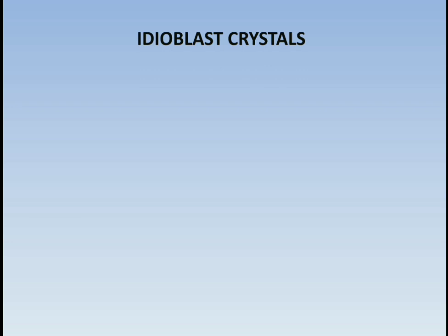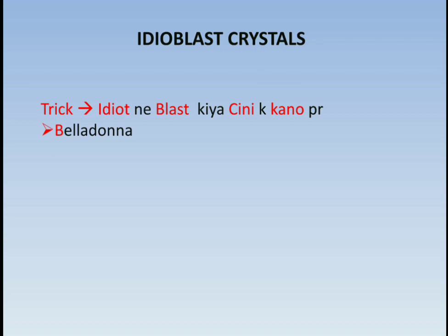Next is idioblast crystals. The trick to learn which drugs have idioblast crystals is: 'Idiot ne blast kia sini ke kanon par,' meaning idioblast. Idiot resembles idioblast. B denotes belladonna, sini denotes cinchona, and kaan resembles cocaine — so belladonna, cinchona, and cocaine are the drugs showing idioblast crystals.